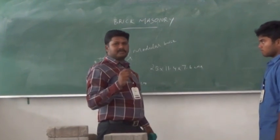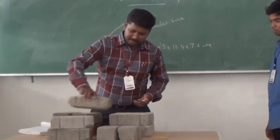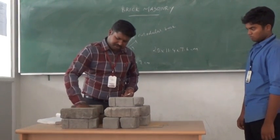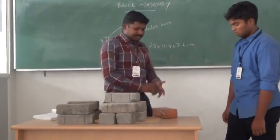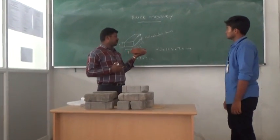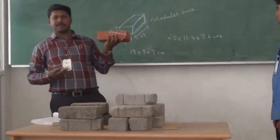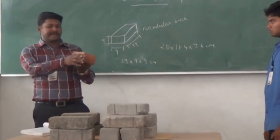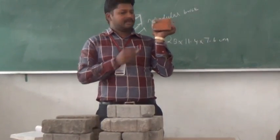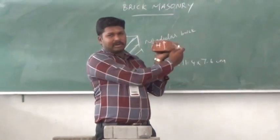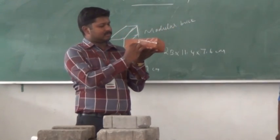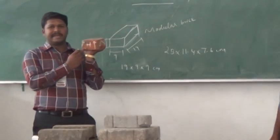Next, the important terms of brick masonry we have studied from practical masonry. First, we are using traditional bricks, not modular bricks. The traditional brick is a different size, maybe 23 by 11.4 by 7.4 centimeters. First, we study the header. Header means the perpendicular to the longitudinal direction is called a header. Parallel to the longitudinal direction is called a stretcher.